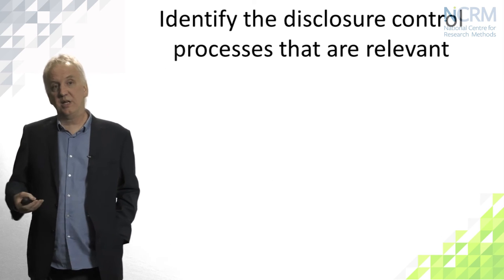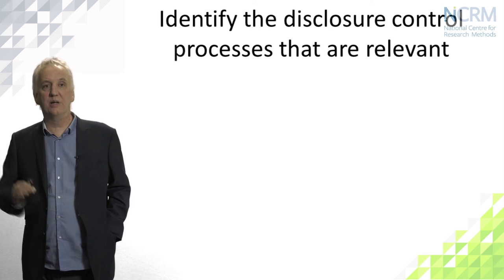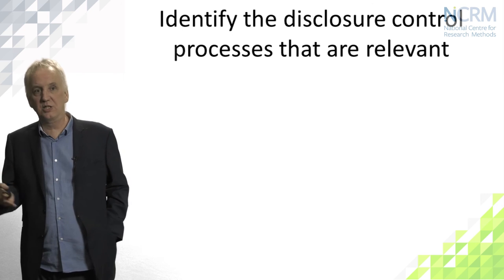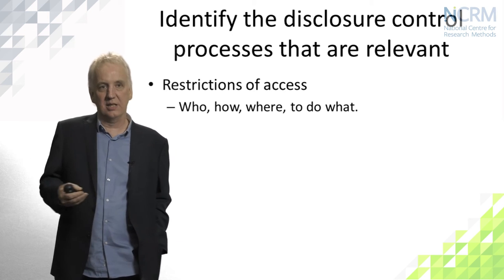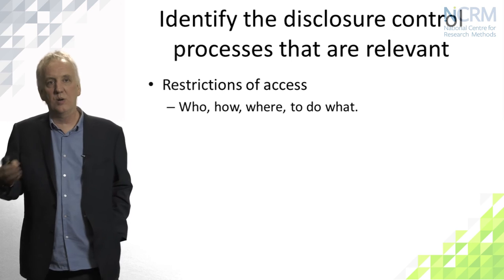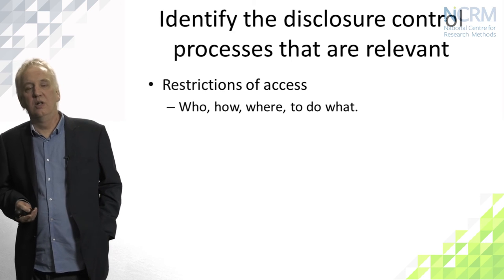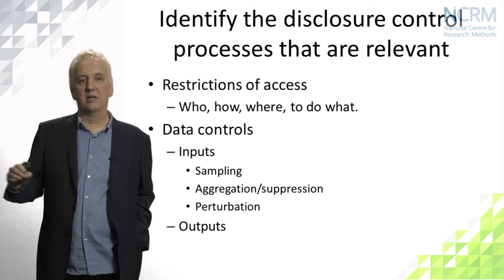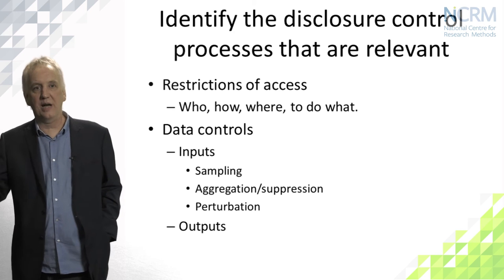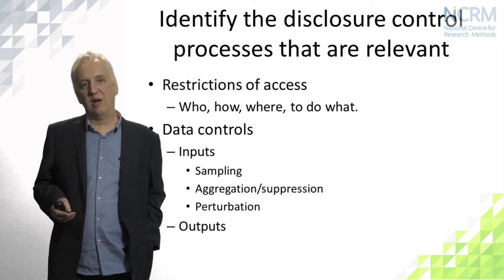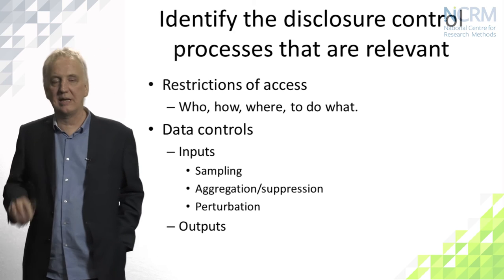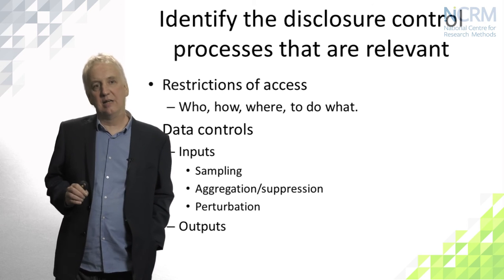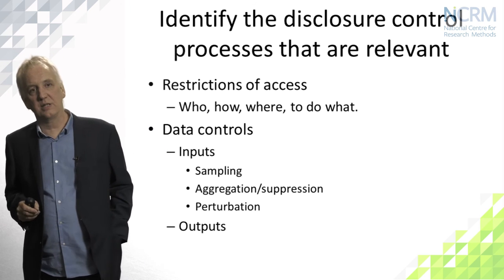Once you've done your risk analysis, you know where you need to bring the risk down to a negligible level and what controls to apply. There are essentially two types of controls: you can restrict access — who, how, what, where, and to do what — or you can place controls on the data itself. For example, you might only release a sample rather than the full data set, decide to aggregate or suppress variables, or perturb the data by adding noise in some way.